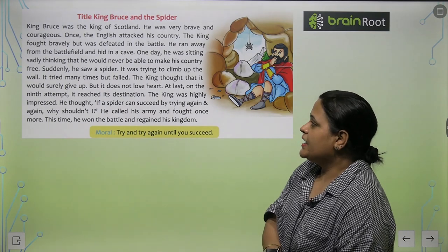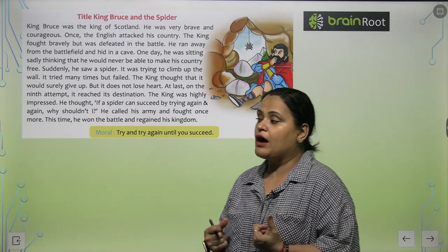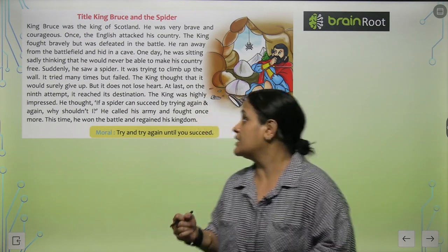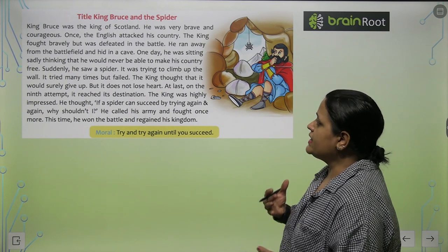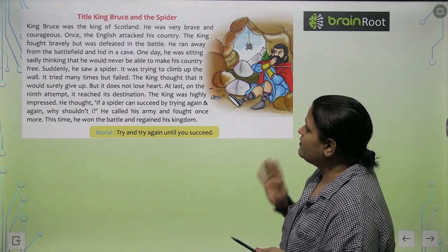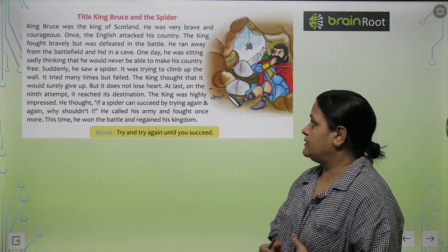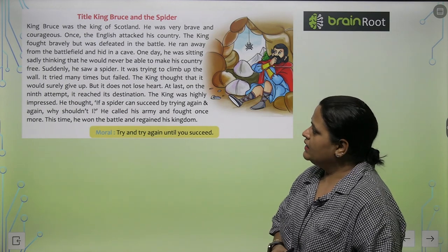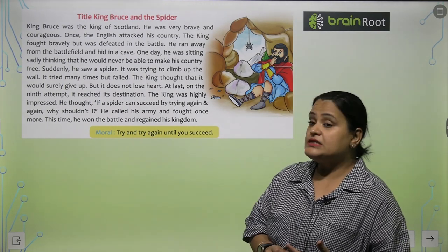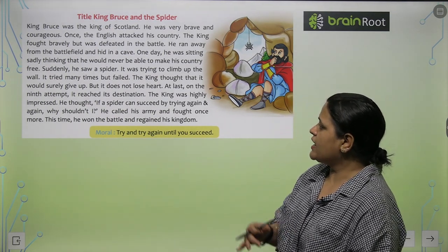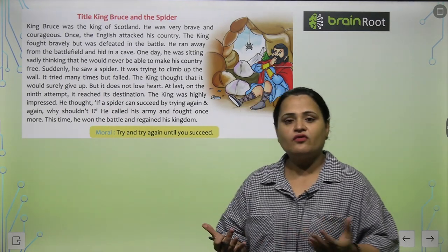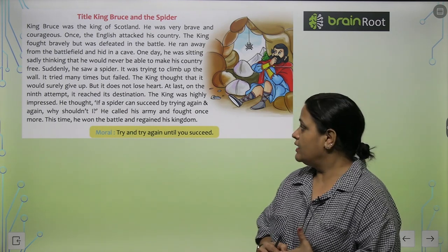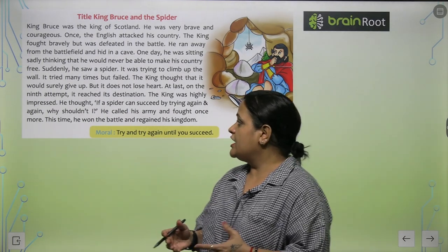So now this is the story. King Bruce was the king of Scotland. Notice the story is running in past tense. He was very brave and courageous. Once the English attacked his country; the king fought bravely but was defeated in battle. He ran away from the battlefield and hid in a cave. One day he was sitting sadly, thinking that he would never be able to make his country free. Suddenly he saw a spider. It was trying to climb up the wall. It tried many times but failed.